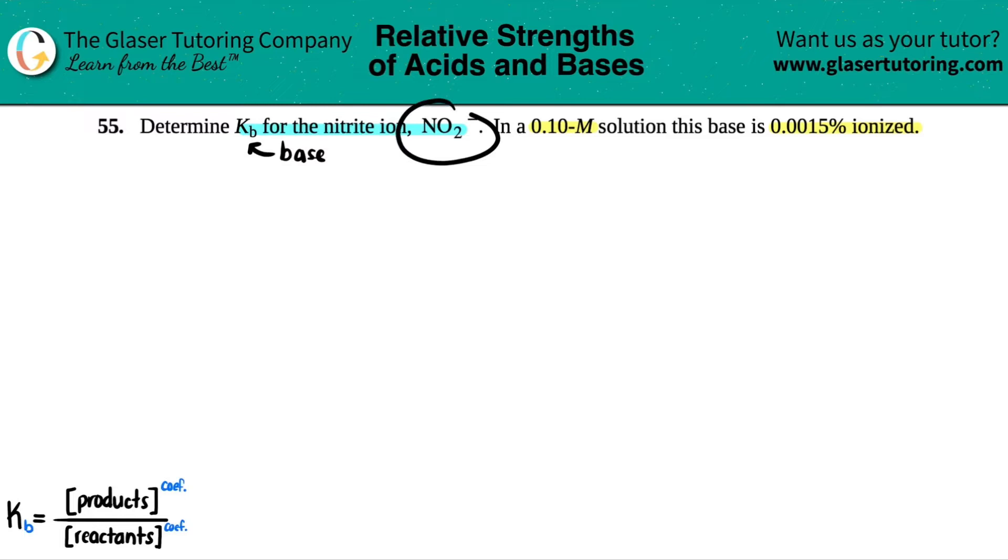All acids and bases are always in water. So in this case, my nitrite ion NO2 minus is going to be reacting with H2O. Nitrite is not one of my six strong bases, so it's going to be at equilibrium. It's not going to dissociate 100%.